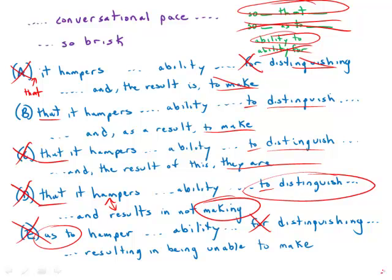That just leaves B, and B is grammatically correct, direct, sleek. It is a very strong answer choice and certainly the strongest among these five. Answer choice B.